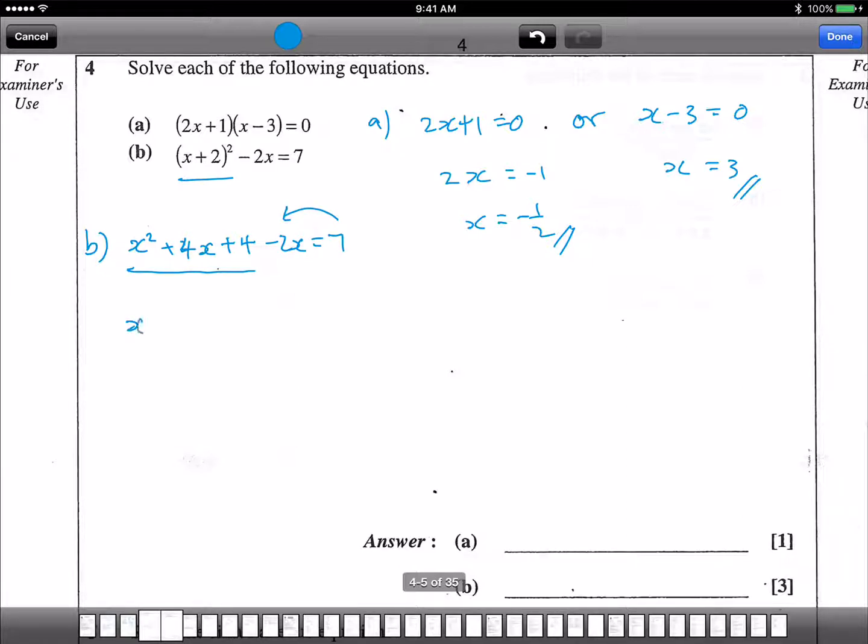We evaluate x square plus 4x. Okay, we're done. Alright, so plus 4x minus 2x becomes 2x, then plus 4 take away 7 equals to 0. x square plus 2x plus 4 minus 7 is minus 3 equals to 0. Now at this point of time, we have to use your factorization.